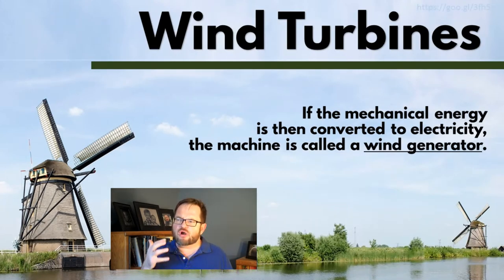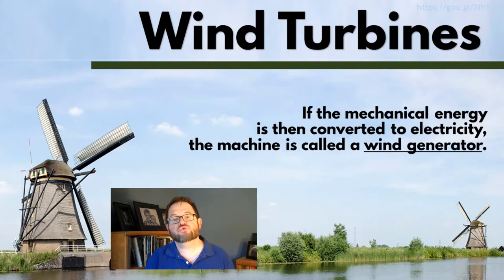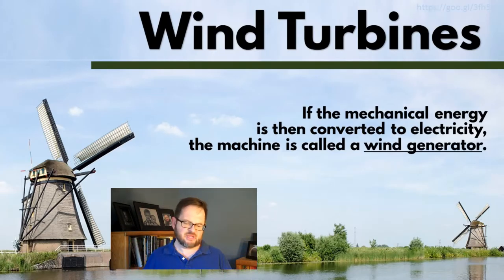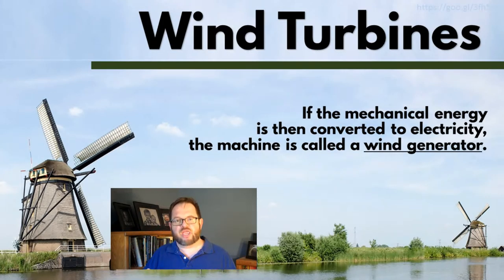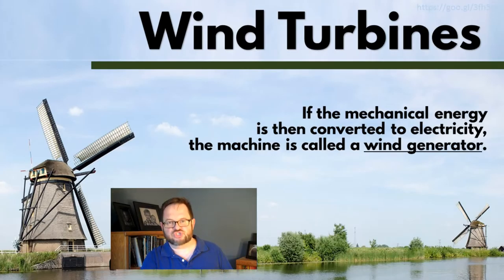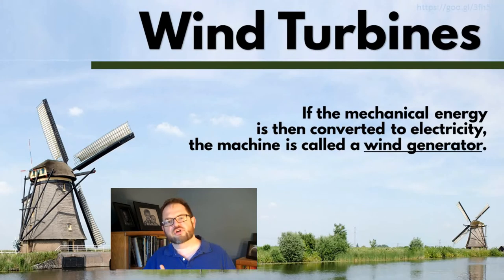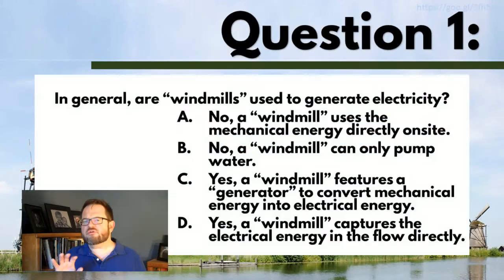All these things we've been discussing produce power directly, taking energy captured by the rotor and using the mechanical energy of the rotating shaft. But if you use that mechanical energy to produce electricity, strictly speaking what you have is a wind generator. The word generator refers to any way of taking rotating mechanical energy and converting it into electricity — whether that's a diesel generator, hydroelectric, or whatever; any kind of rotational motion can be converted into electricity by a generator. Now, before we move on to part two of this lecture about wind turbines, let's do three quick questions.